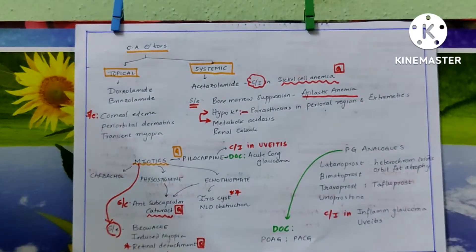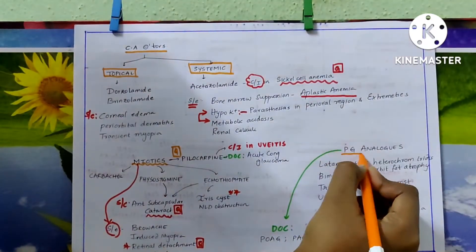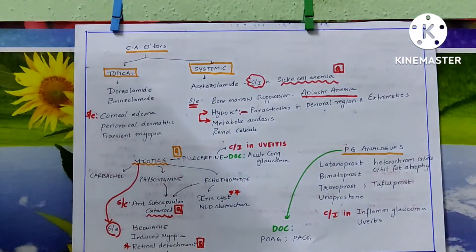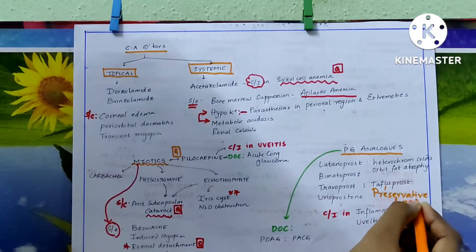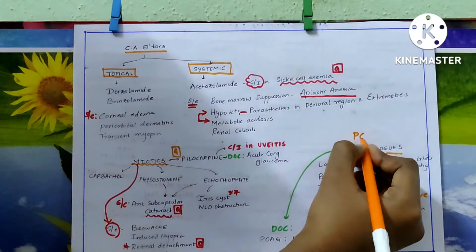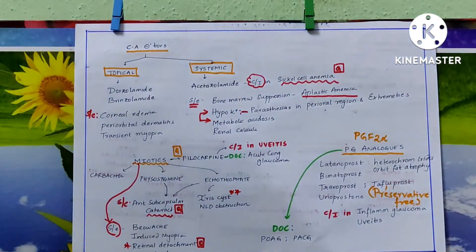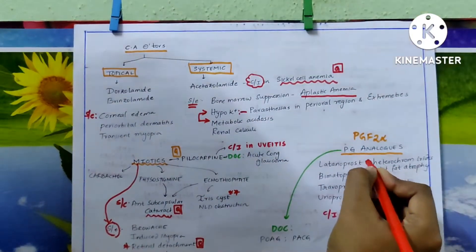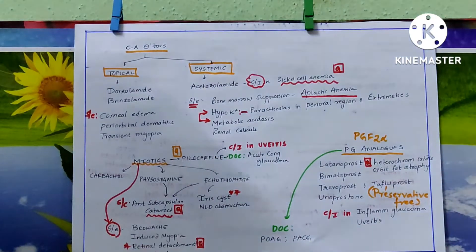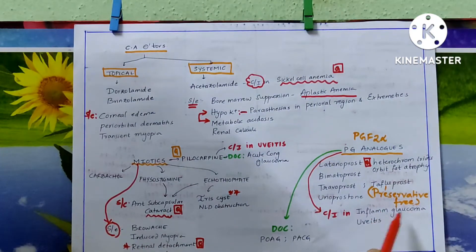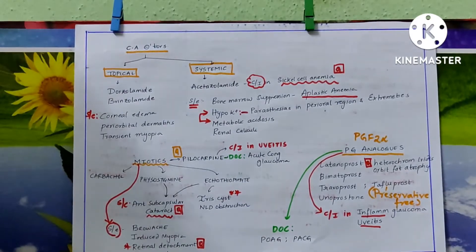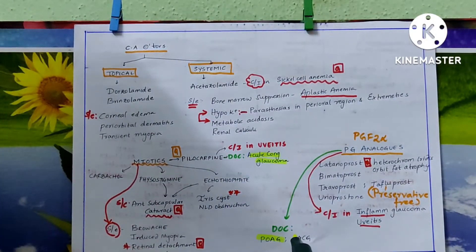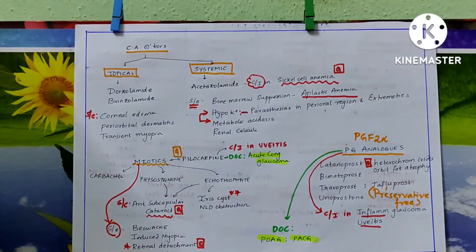Prostaglandin analogues include latanoprost, bimatoprost, travoprost, and unoprostone — all ending in '-prost.' Tafluprost is a recently developed drug that is preservative-free — you may get a question asking which anti-glaucoma drug is preservative-free. The prostaglandin receptor these drugs act on is PGF2-alpha. Latanoprost causes heterochromia iridis, hypertrichosis, and orbital fat atrophy. Prostaglandin analogues are contraindicated in inflammatory glaucoma and uveitis. They are the drug of choice in POAG and PACG, whereas pilocarpine is the drug of choice in acute congestive glaucoma.